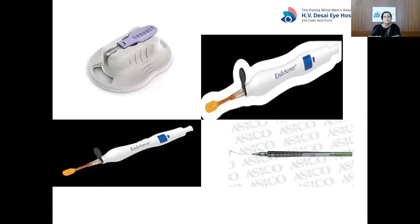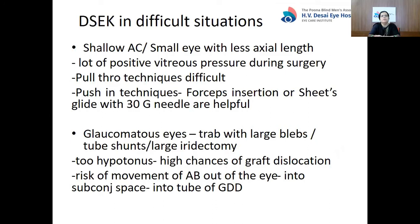Difficult situations include shallow AC or small eyes — especially Asian or Indian eyes with less axial length — which present a difficult situation because of positive vitreous pressure during surgery, making the pull-through technique difficult. As a contingency technique, the push-in technique, forceps insertion, or sheet glide insertion with a 30-gauge needle is helpful in these situations.